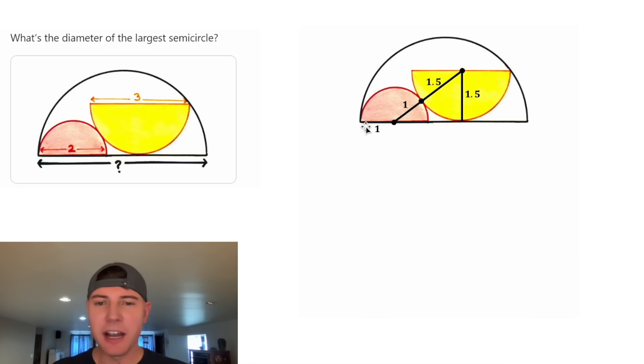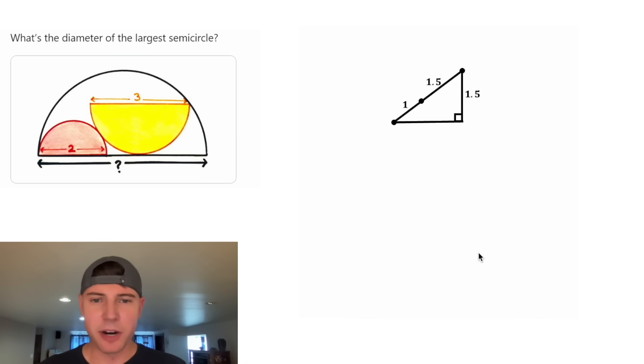Next, we can swing this radius down here, and it's going to be at right angles to this tangent line. And now we've got a nice looking right triangle. On the hypotenuse, the 1 and the 1.5 can combine to give us 2.5. Now let's call the unknown side x.